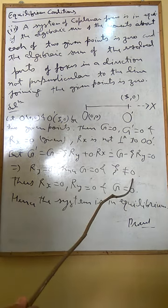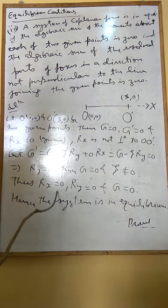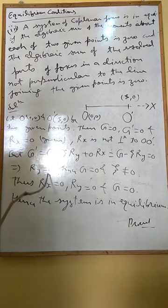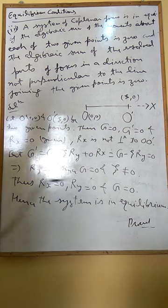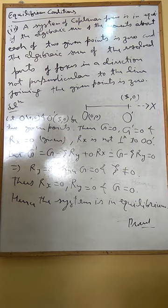Thus Rx is zero from here, and Ry is zero from here, and G is zero from here. This is our earlier condition of equilibrium, and the system is in equilibrium.